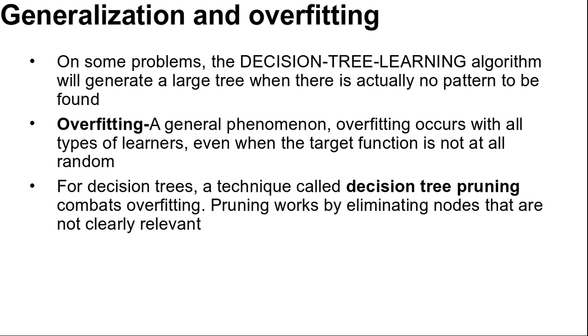For decision trees, a technique called decision tree pruning combats overfitting. Pruning works by eliminating nodes that are not clearly relevant. We start with a full tree as generated by decision tree learning, then look at test nodes that have only leaf nodes as descendants. If the test appears to be irrelevant, detecting only noise in the data, then we eliminate the test, replacing it with a leaf node. We repeat this process, considering each test with only leaf descendants, until each one has either been pruned or accepted as is.